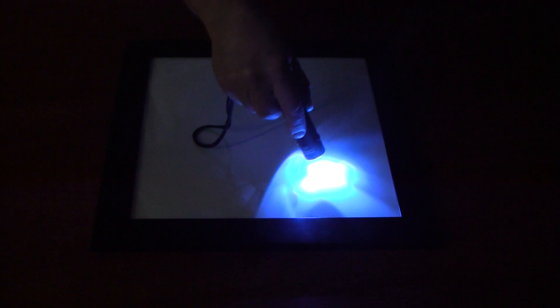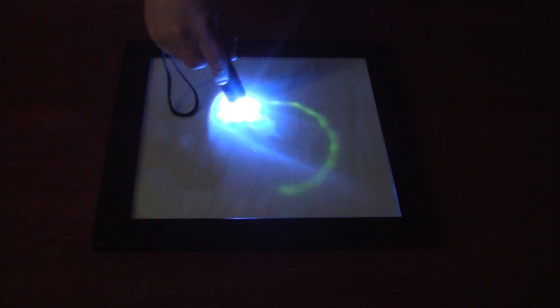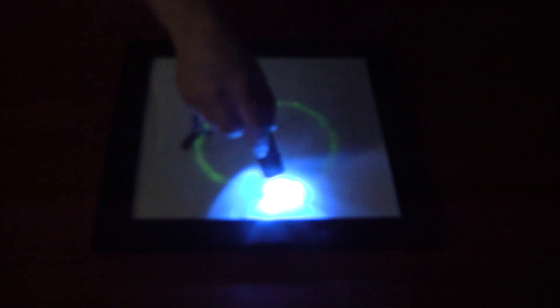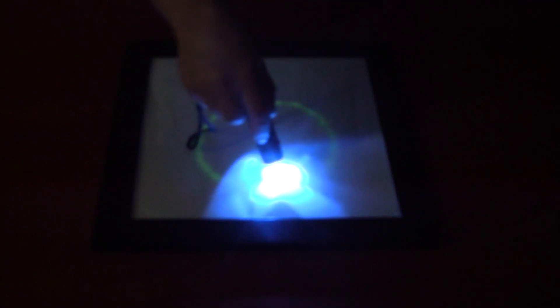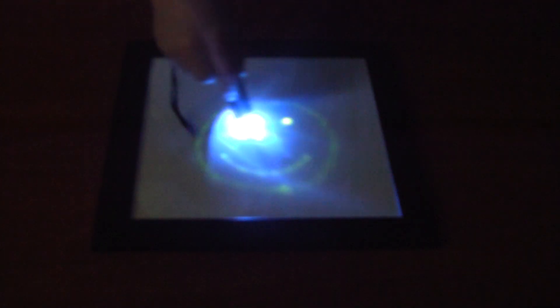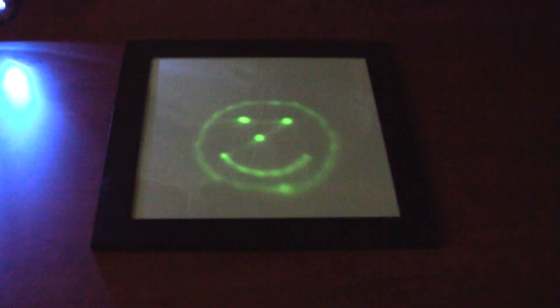I'm going to start with the flashlight set to emit blue light. This is the shortest wavelength of the three colors and thus the highest energy light. I can easily use the flashlight to draw on the screen as long as I move it slowly. The smiley face will persist for several minutes.